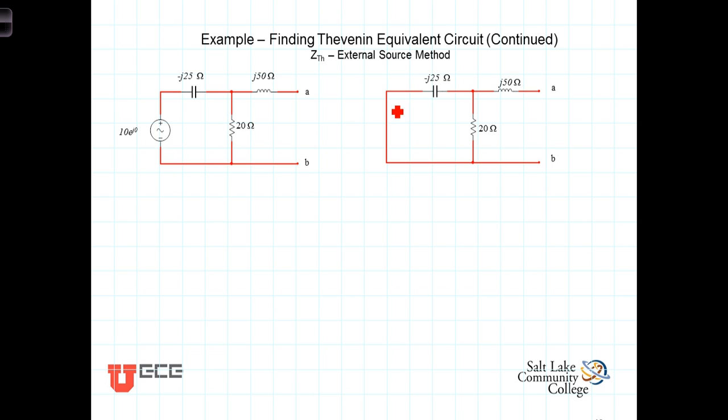We're going to deactivate that independent source by replacing it with a short circuit. This method then involves applying an external voltage source, call it VEX for external, which would then cause a current to flow. We'll call it IEX for the external current.